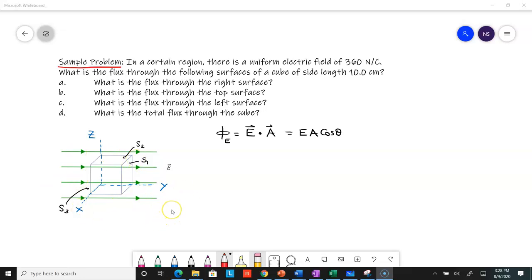The electric field is 360 newtons per Coulomb in the positive J direction, along the Y axis. You're asked to calculate the electric flux through the right surface, the top surface, and then the left surface.